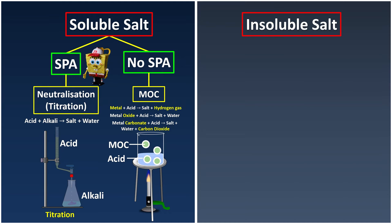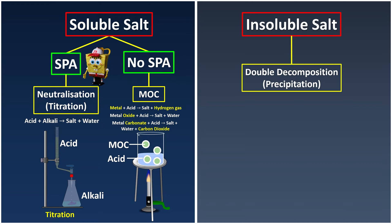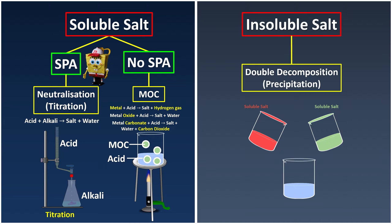For insoluble salt — you can think that 'insoluble' eventually contains 'soluble,' two words — we use the double decomposition method, also known as the precipitation method. It uses two different kinds of soluble salts, mixed together. Once you mix and stir with a glass rod, a precipitate forms. This precipitate is the insoluble salt we want, and the byproduct is one of the soluble salts.